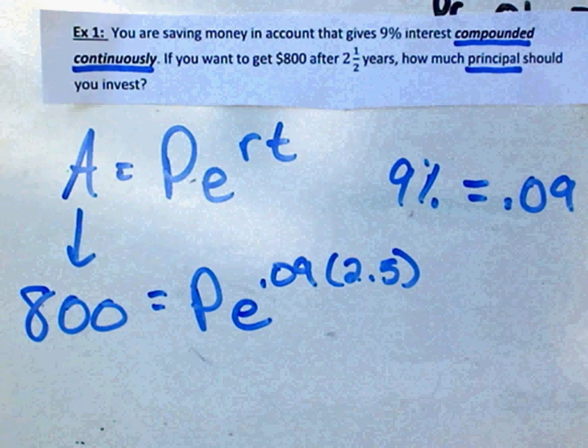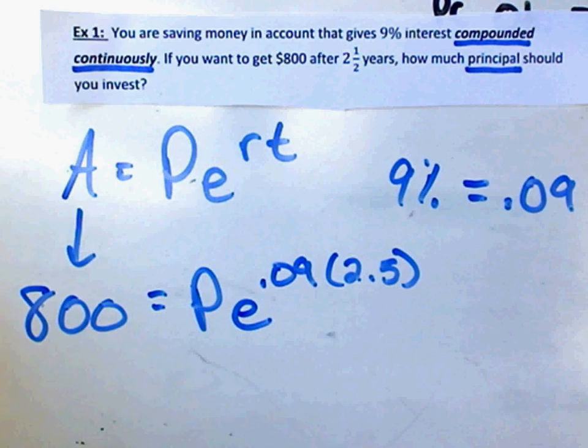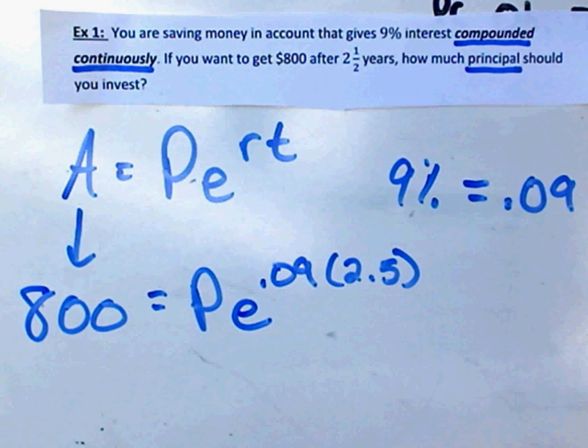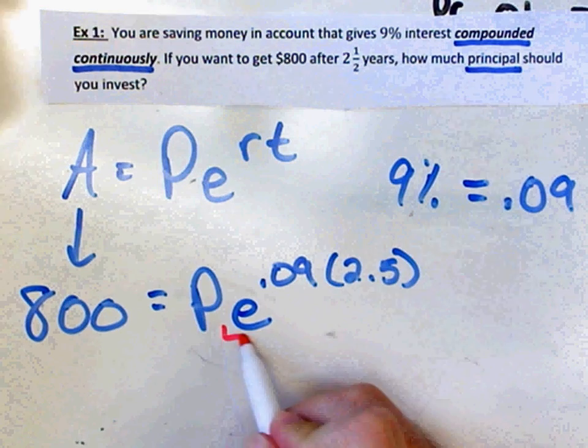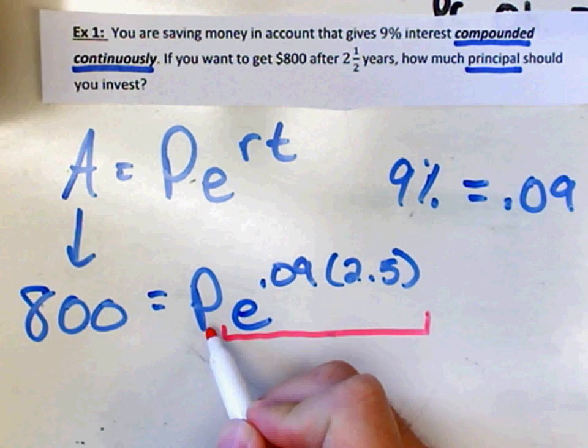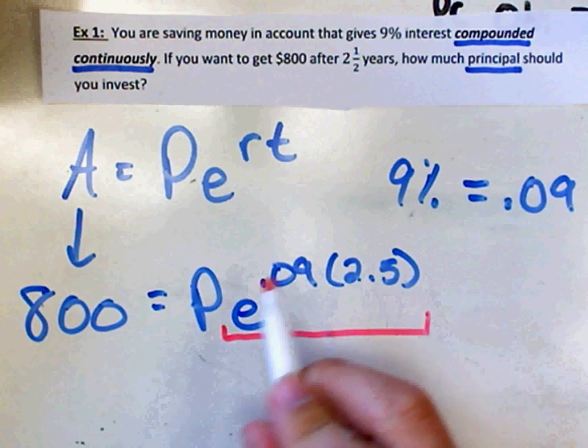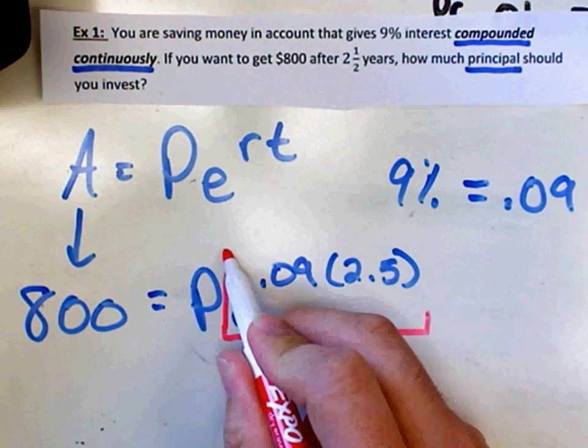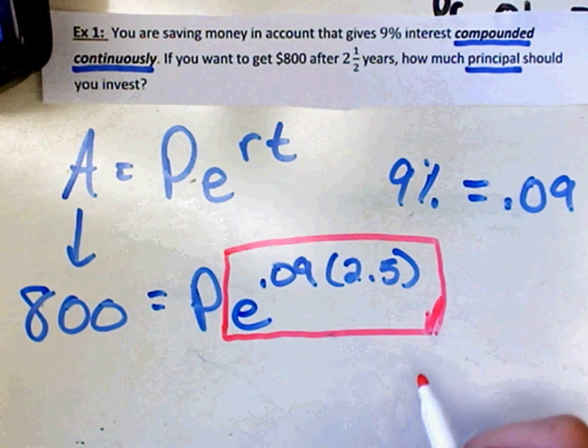As complicated as this might look, it is all work that we can do in our calculator. So I want you to focus on this part right here. We're solving for P, but this is a number. This whole thing right here is just a number. And we're going to use our calculator to calculate what that is.